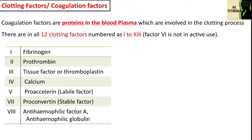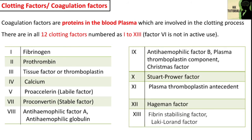Factor number 7 is proconvertin, also known as the stable factor, and its source is the liver. Factor number 8 is anti-hemophilic factor A, and its source is the endothelium of the blood vessels. The deficiency of factor number 8 causes classical hemophilia — a disease in which blood doesn't clot easily. Factor number 9 is anti-hemophilic factor B, also known as Christmas factor, and its source is the liver.